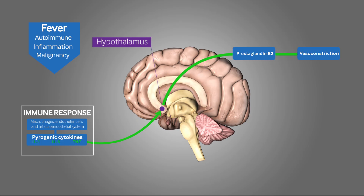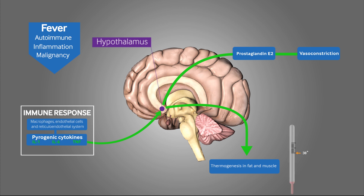This triggers vasoconstriction, shunting blood towards the internal organs and away from the peripheries, decreasing heat loss from the skin surface. At the same time, thermogenesis in fat and muscle stores is initiated, further increasing the core body temperature.